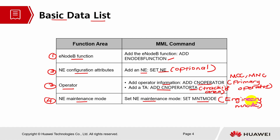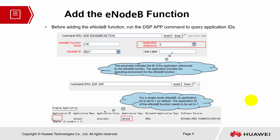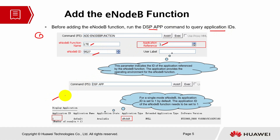These are the basic data list. The first command is add eNodeB function. In add eNodeB function, we'll be adding the LGA, the eNodeB ID, and application reference. We can use the display application command to query the application IDs — to see how many applications the base station has. If it's a standalone base station, it will only have one application.